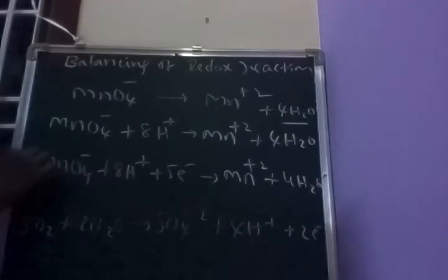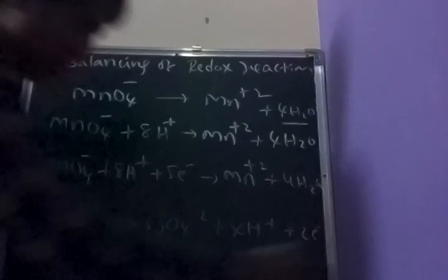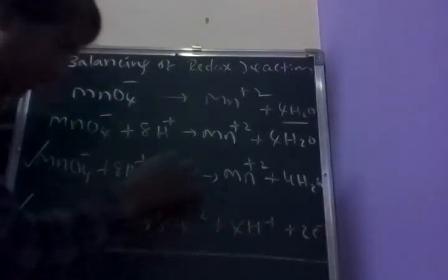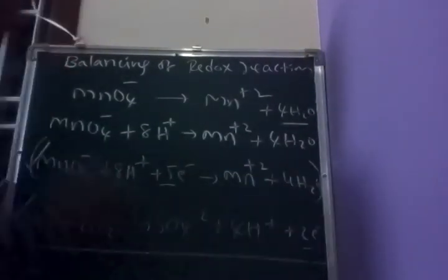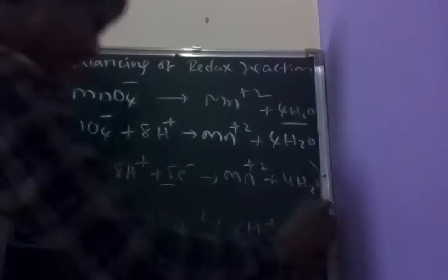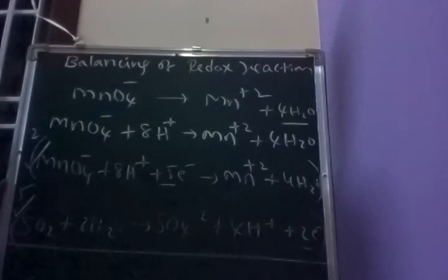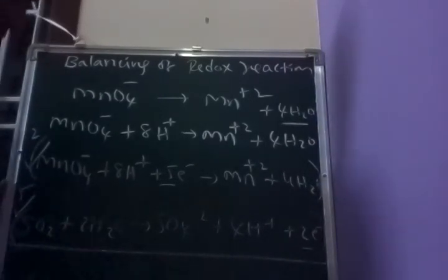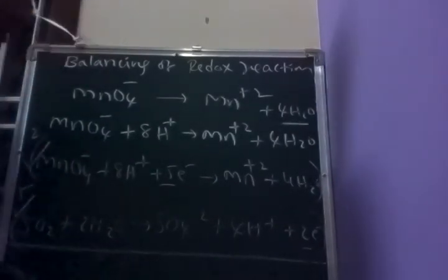This is the balanced reduction half reaction. Now these two half reactions are combined by equalizing electrons. The reduction half reaction has 5 electrons and the oxidation half reaction has 2 electrons. So the oxidation half reaction is multiplied by 5 and the reduction half reaction is multiplied by 2. We then add them to get the net balanced chemical equation. This method of balancing is known as the half reaction method in acidic medium.